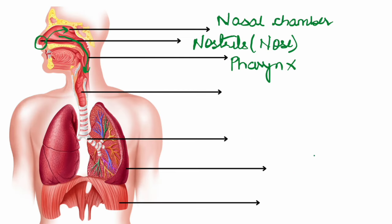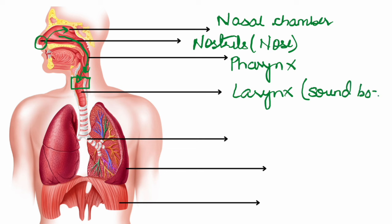The pharynx leads us to a structure known as the larynx. The larynx is your sound box or voice box — it is because of the larynx that your voice comes. Larynx damage means no voice.